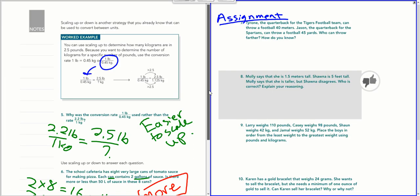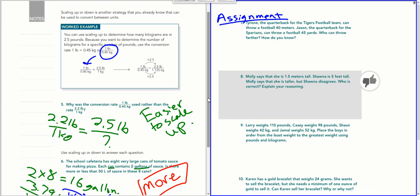We're using scaling up to convert between units of measure. So if I have 2.5 pounds and I want to know how many kilograms that is, I need a conversion between pounds and kilograms. See how this is written in the equation form? One pound is equal to 0.45 of a kilogram. Then we want to write that as a ratio or a fraction. And we're going to put one pound over 0.45 kilograms.